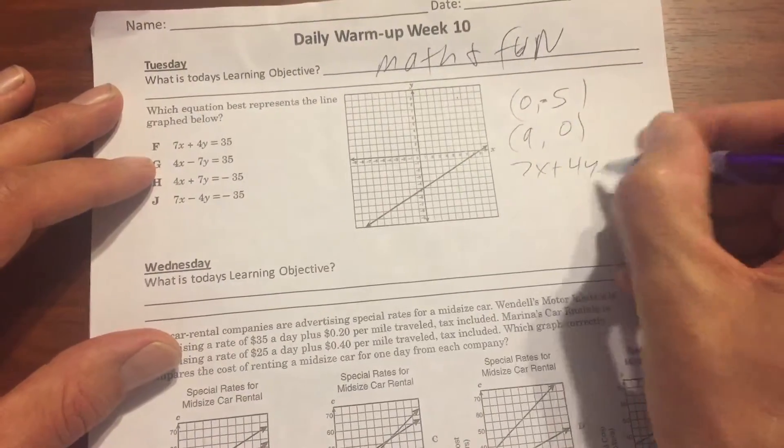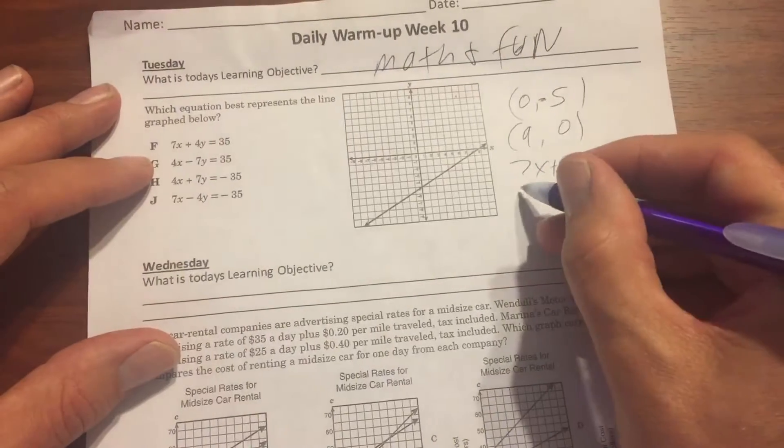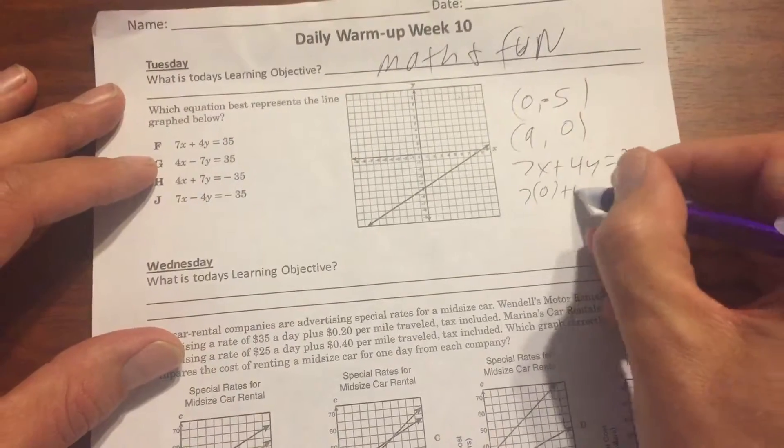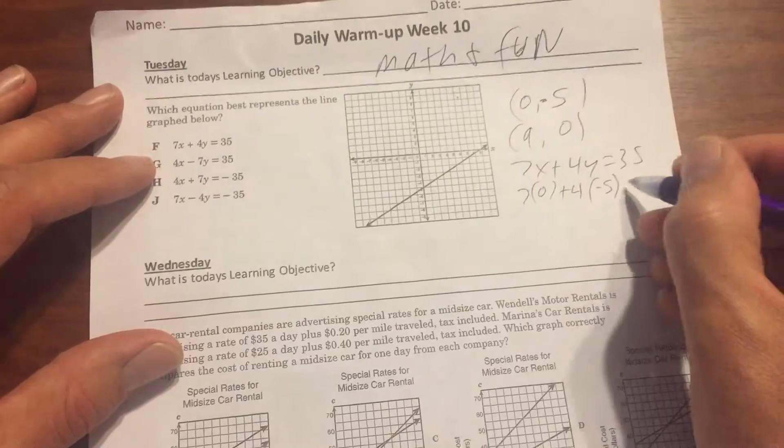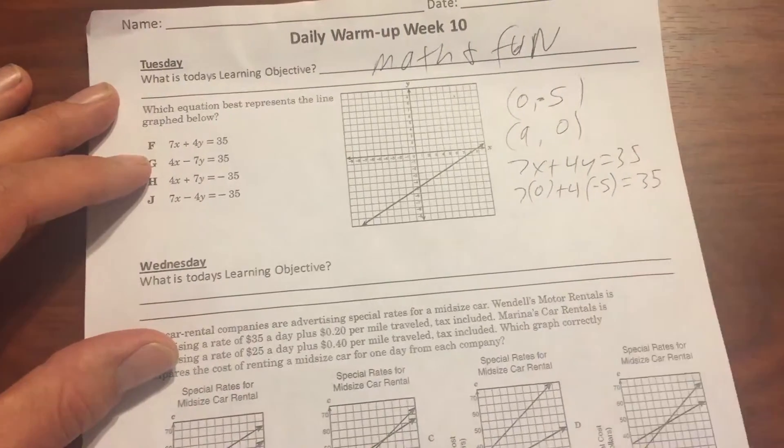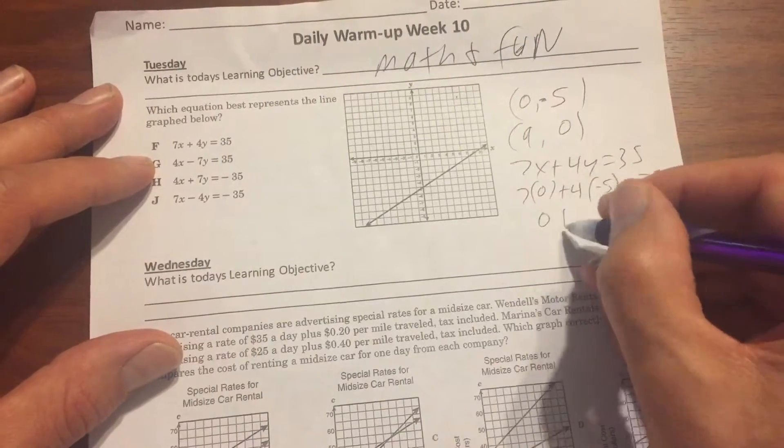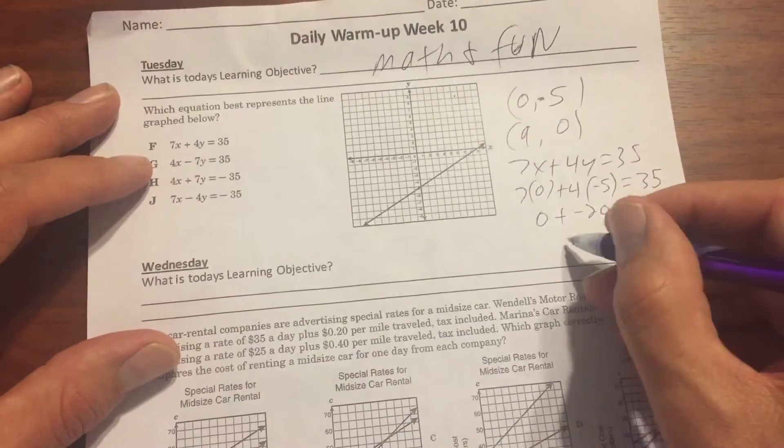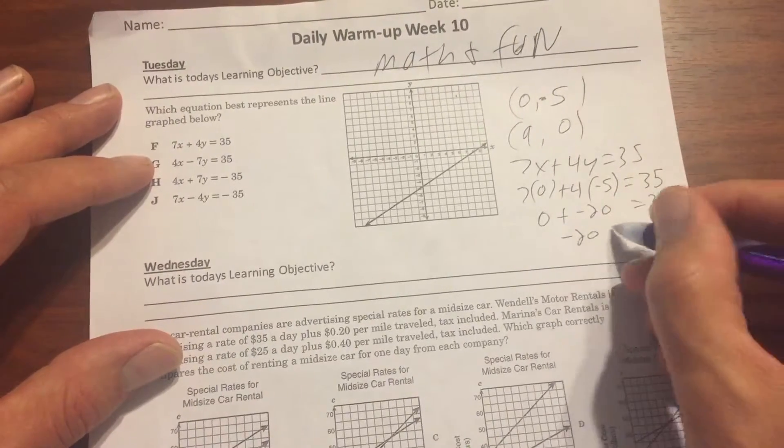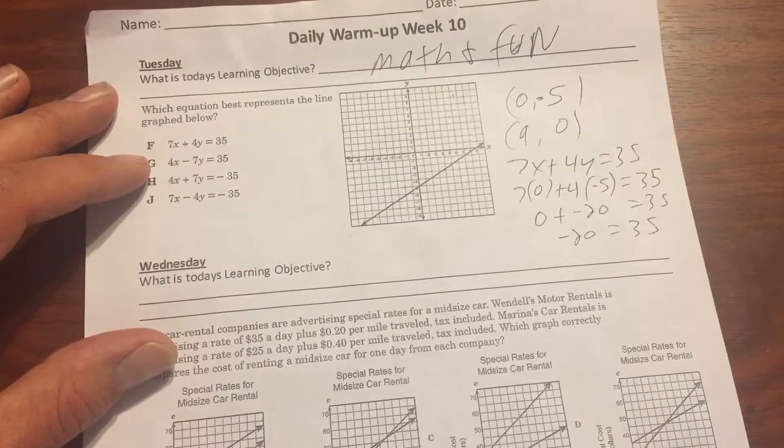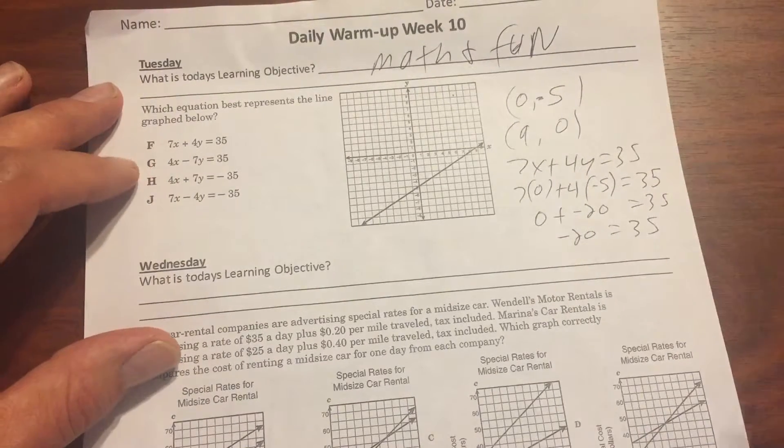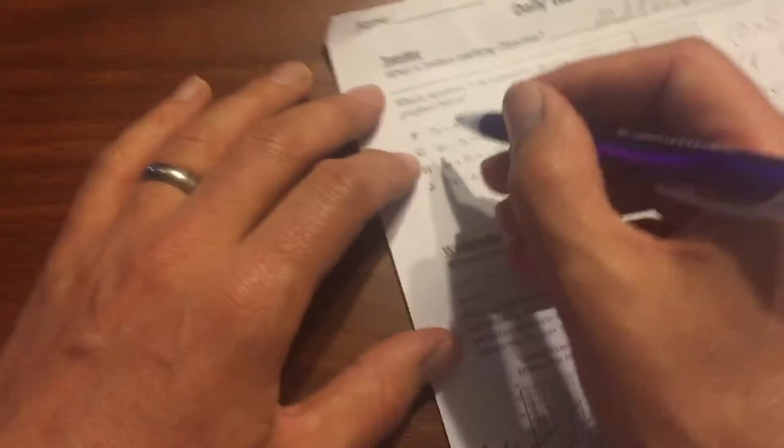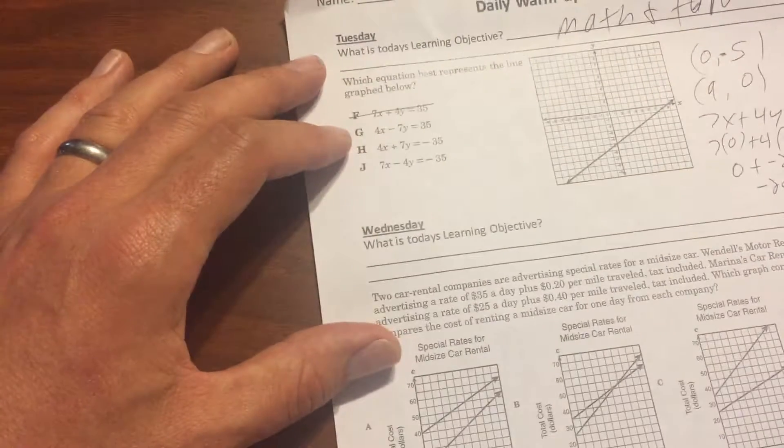So let's take one of our first equations here and see what fits in. So 7x plus 4y is equal to 35. Pulling these numbers in, 7 times 0 plus 4 times negative 5 is equal to 35. So this is going to be zero plus a negative 20 is equal to 35. So that is negative 20 is equal to 35. Is negative 20 and 35 the same thing? No, we could actually go and try it for this one here, but we're going to cross that one off, right?